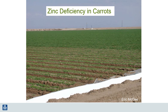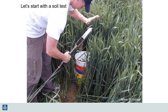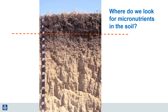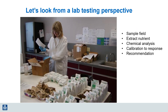Look at this picture of a crop response to added zinc fertilizer. Let's go through the process of determining where micronutrient fertilization will be helpful. Often we begin with a soil test. Getting a representative sample of the root zone is essential in getting an accurate soil recommendation. The soil sample then goes to the lab where the nutrients are extracted, chemically analyzed, and the data is interpreted to predict the likelihood of a crop response. The next step is to make a fertilizer recommendation.